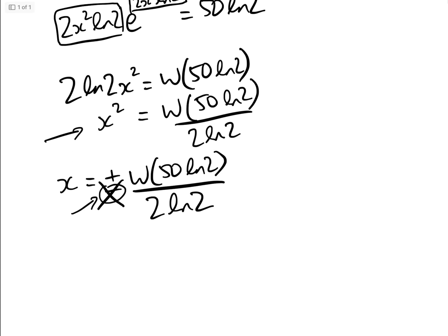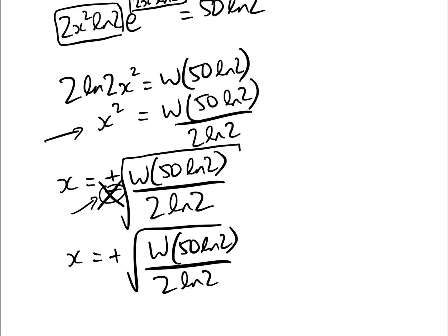That's the only one we want. My apologies, I should put a square root under there, but all of what I just said is valid. We know that x is only equal to the positive square root of W(50ln2)/(2ln2), and we can ignore the negative solution.